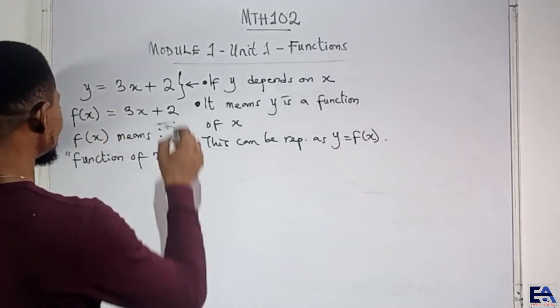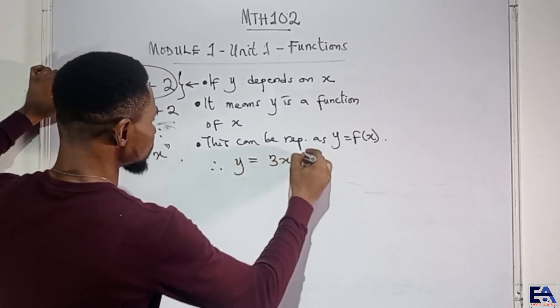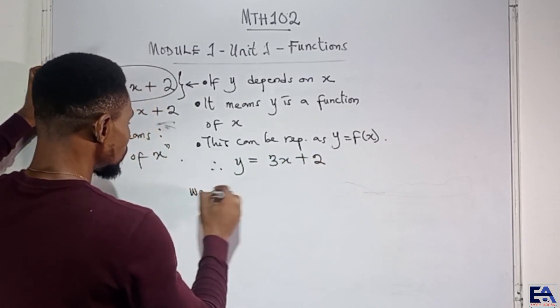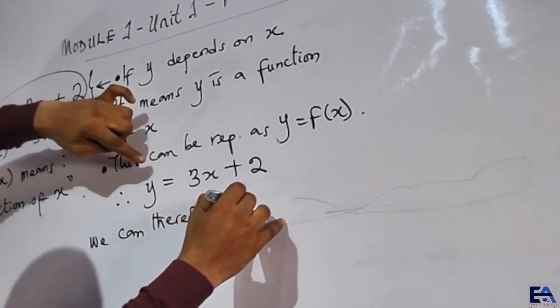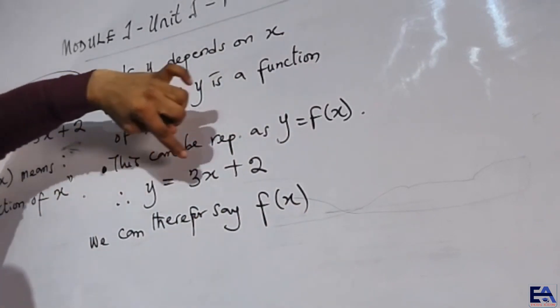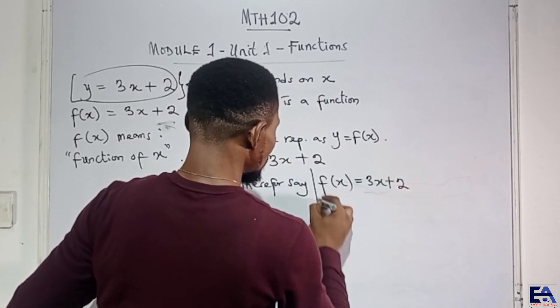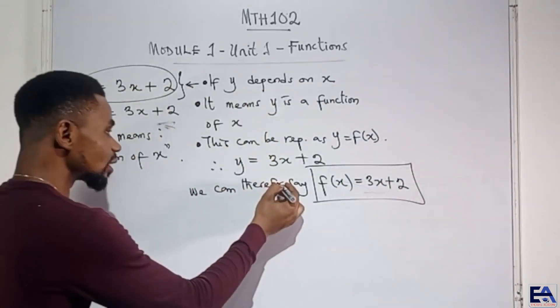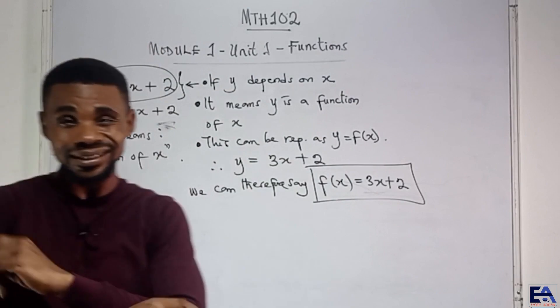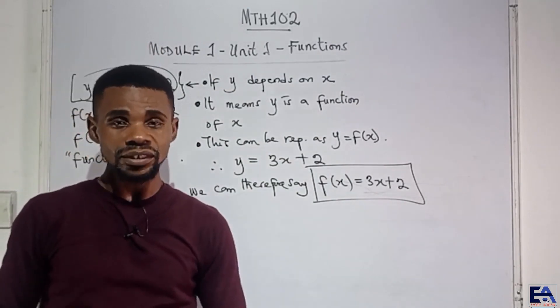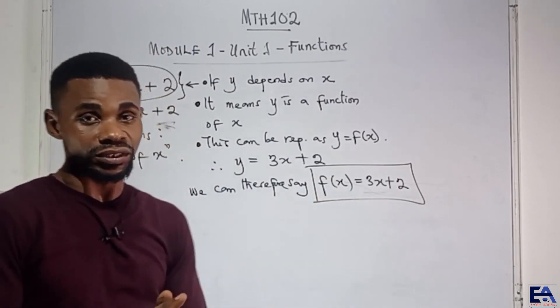So if we have this, if we say y is equal to 3x plus 2, we can therefore say that f of x, since y is a function of x, instead of saying y equals 3x plus 2, we can say f of x is equal to 3x plus 2. They are the same, practically the same thing. No biggie, no big difference. It's just the same thing. The difference is just the way the stuff is being represented.